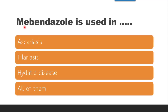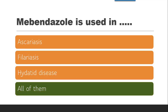Next question: Mebendazole is used in — whether ascariasis, filariasis, hydatid disease, or all of them. Ascariasis — yes, it is a roundworm infection. Filariasis — again a roundworm infection. Hydatid disease — yes, it is also effective in hydatid disease. So the correct answer is all of them. Along with these, mebendazole is also used in tropical or pulmonary eosinophilia, that is increase in WBC treatment.